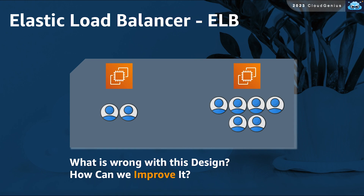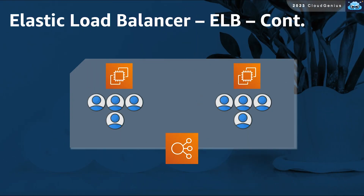Auto-scaling groups, or having multiple resources in parallel, has provisioned the needed resources to handle the current load, but one more component is still needed to improve that design. What's missing is an extra component that would serve as a traffic distributor in front of your resources. Your clients do not communicate directly with the back-end resources, but rather with this new component, which is responsible for fairly distributing the incoming requests from clients across the resources.